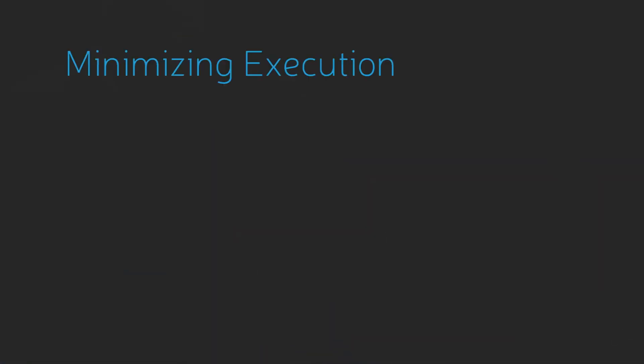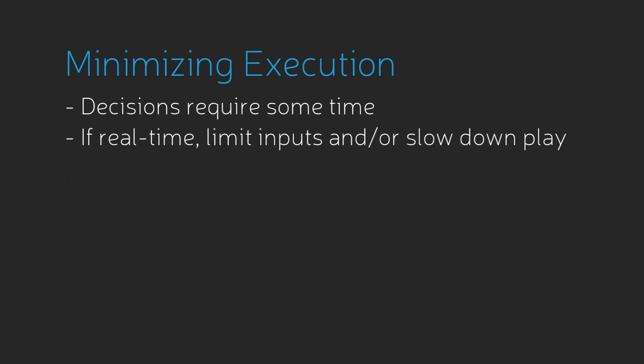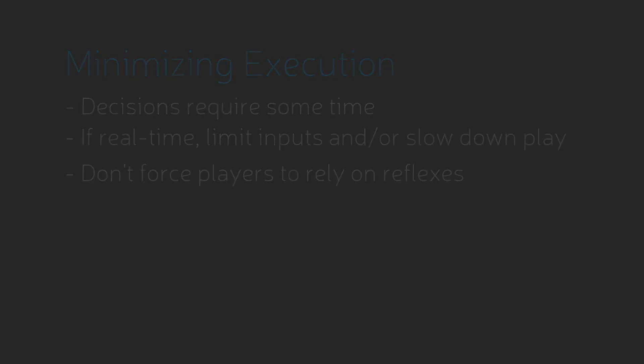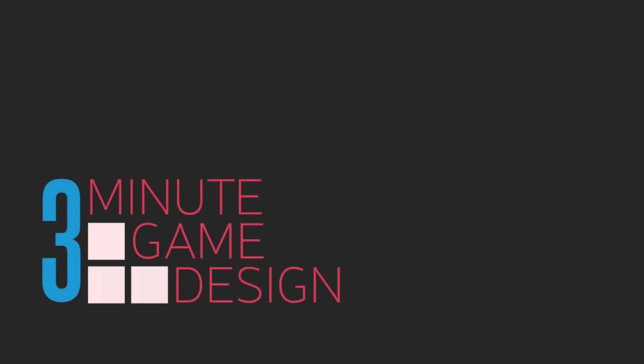The human mind needs some time to process information and then make something that we would normally call a decision. While not all games need to be turn-based, all games do need to allow players enough time to see the game state, process it, and then make a decision. By forcing players to rely on what their hands are already trained to do, you limit their play to only the most shallow and rote sorts of interactions.